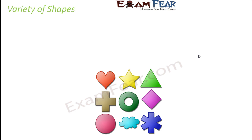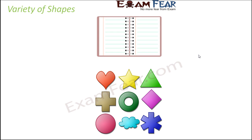Let me talk about some examples where we have specific shapes in use. Look at your notebook — the notebook itself is in the shape of a rectangle. When you look at each sheet of the notebook, you see that there are lines drawn, like in lined notebooks. These are nothing but line segments, which are also elementary shapes.